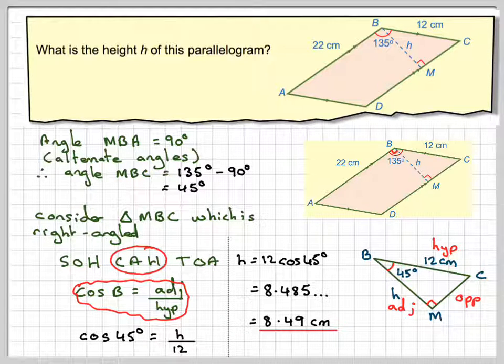Now, from that, if I wanted to, I could now find the area of this parallelogram by taking the base length, which is 22, and multiplying it by the height, which is 8.485. That will give me the area of that parallelogram.